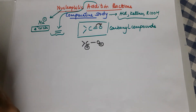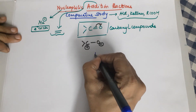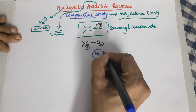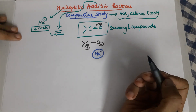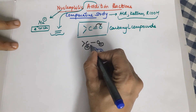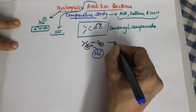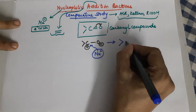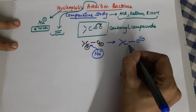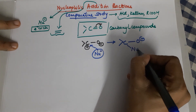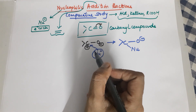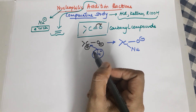Now, where do you think the nucleophile would attack? The nucleophile, which is looking for a positively charged nucleus, will go and attack the positively charged carbon. This leads to a carbon bonded to O⁻ with the nucleophile attached — this is what happens during the addition reaction.